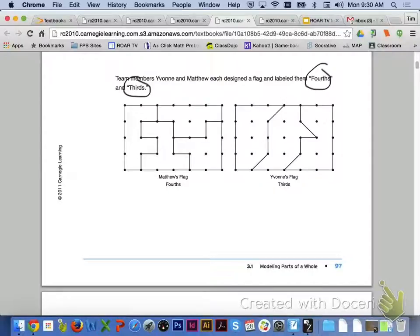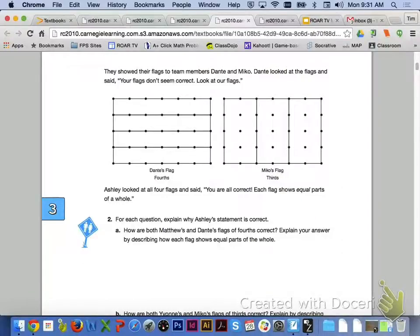Team members Yvonne and Matthew each designed a flag and labeled them fourths and thirds. So, here you can see Matthew's flag divided into fourths, and Yvonne's flag divided into thirds. If we continue to the top of the next page, they showed their flags to team members Dante and Miko. Dante looked at the flags and said, your flags don't seem correct. Take a look at ours. So, you can see that Dante has his divided up into fourths, and Miko has his divided up into thirds.